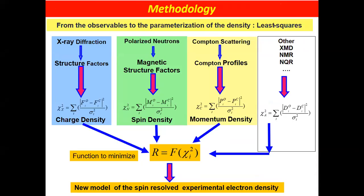So we have many experiments: X-ray diffraction, polarized neutron diffraction, Compton scattering. From X-ray diffraction we get structure factors, magnetic structure factors for polarized neutron, and Compton profiles for Compton scattering. We will mix all these experiments together to get our one-electron density matrix by minimizing a chi-square function combining all these chi-squares. We can also add other experiments like NMR, NQR, or X-ray magnetic diffraction.